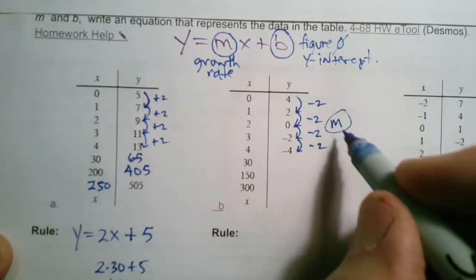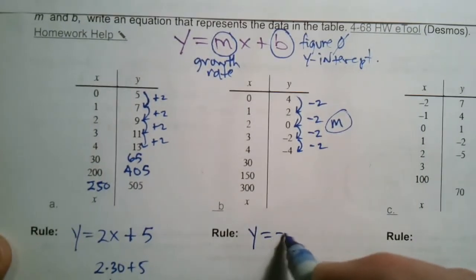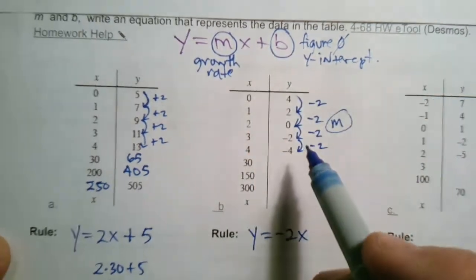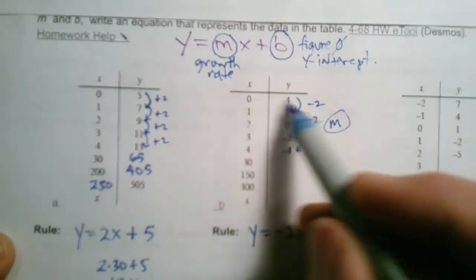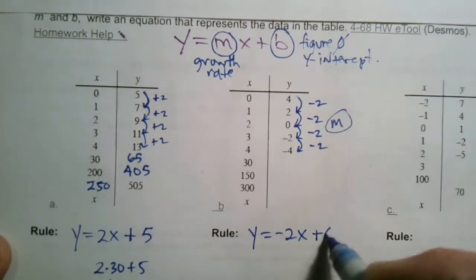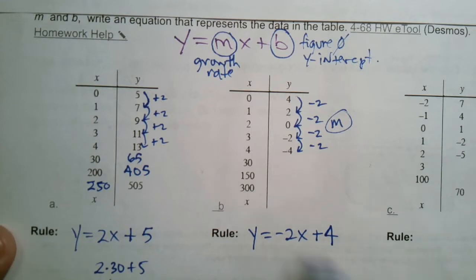That is my growth rate, is negative 2. So I know my rule is y is equal to negative 2x. That's always the m, is always the coefficient of the x. And then what is my initial value, my figure 0? At x equals 0, I get a positive 4 for the y. So I'd say plus 4. So there's my rule.